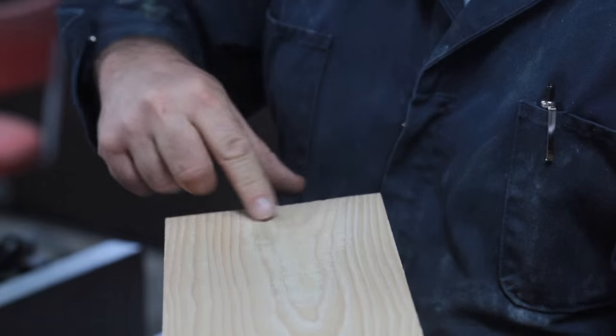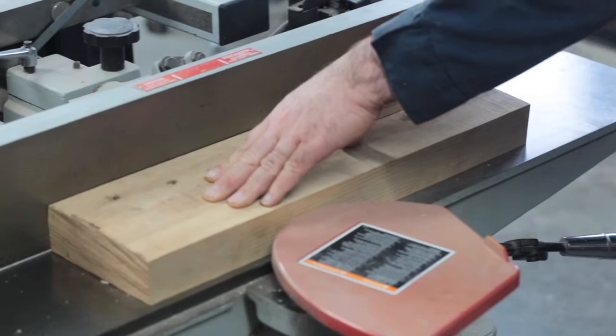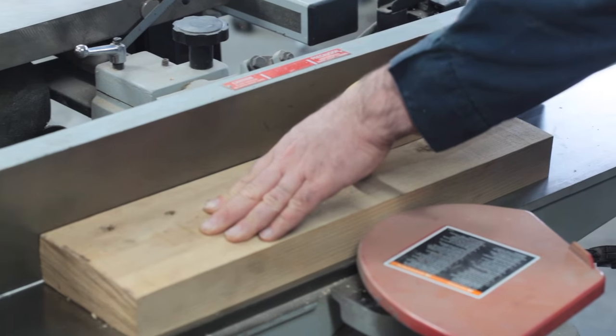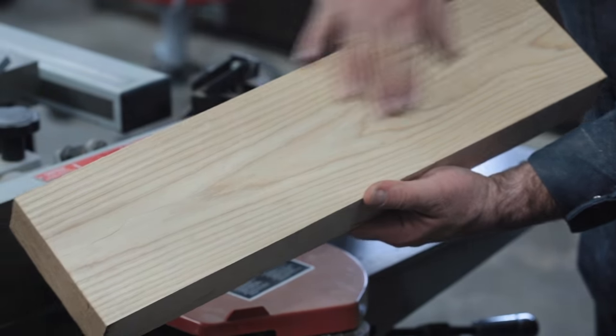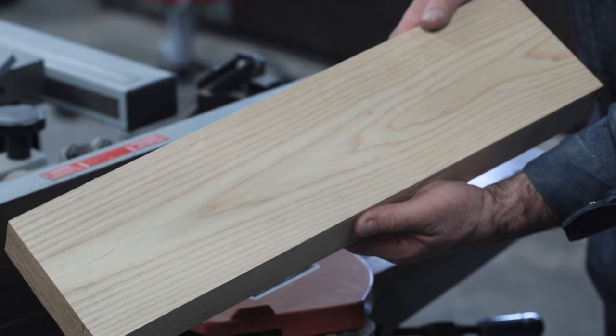There still is a rough area at the trailing end of the board. So another couple of passes are in order. So now we're in good shape. This face is milled to perfection and we're ready to move on to stage two.